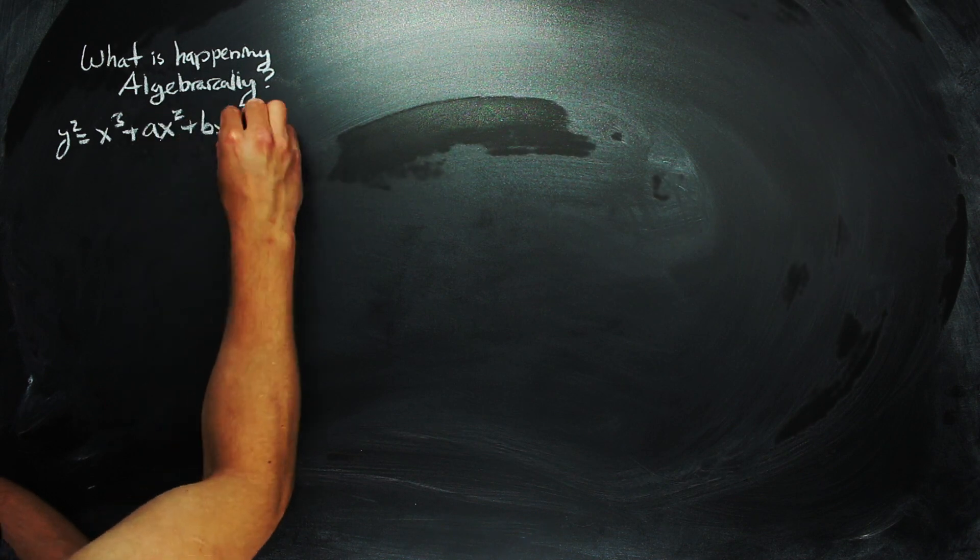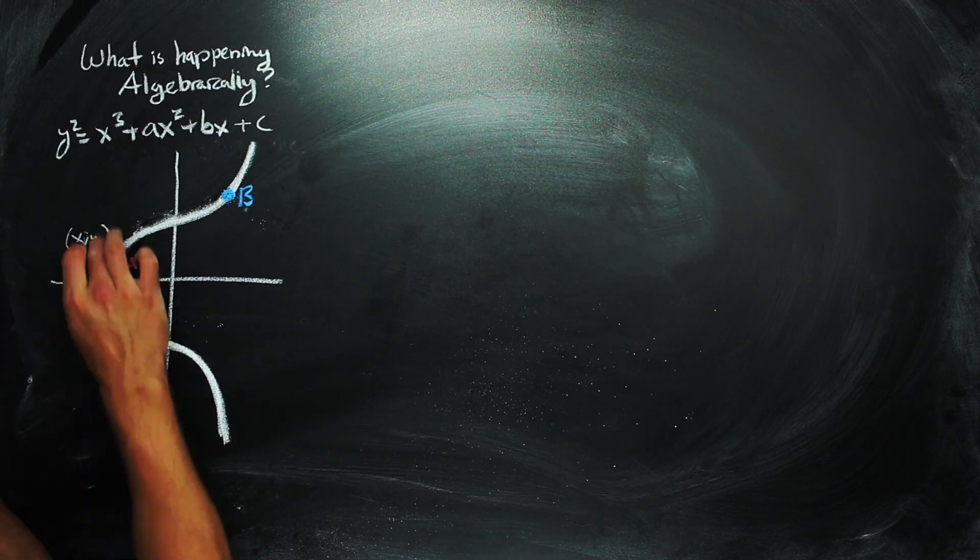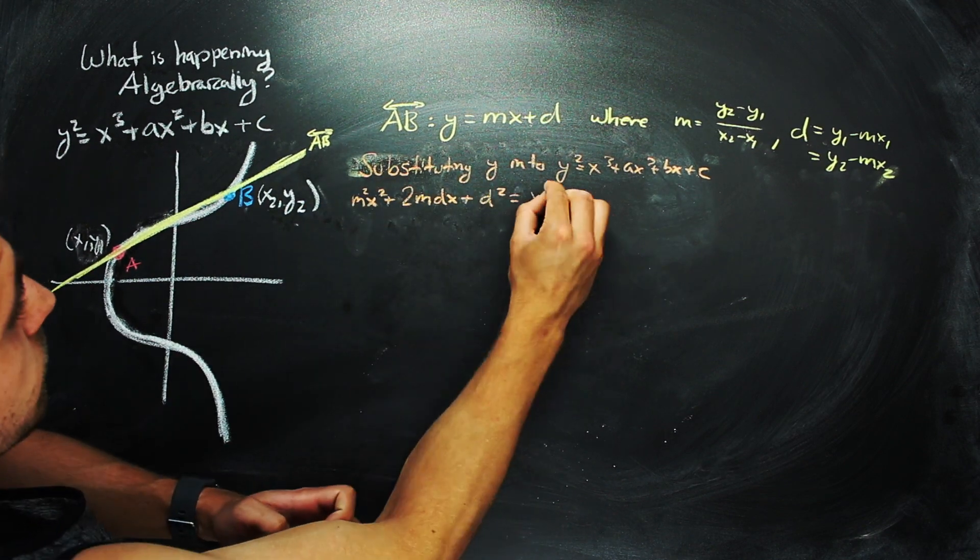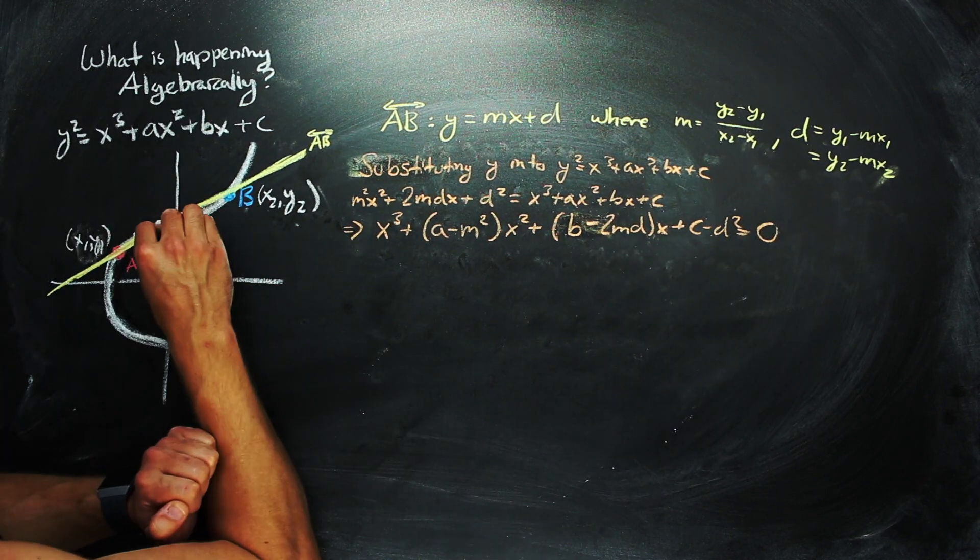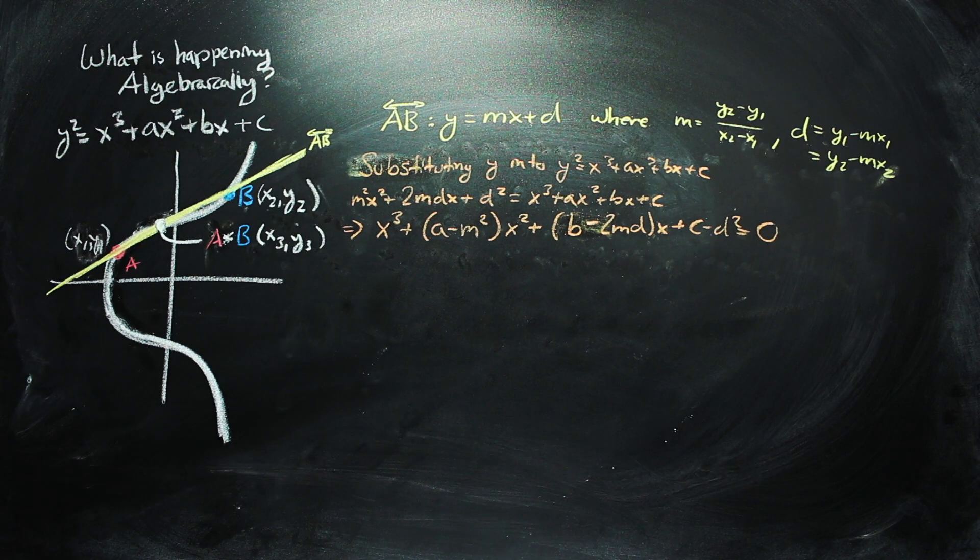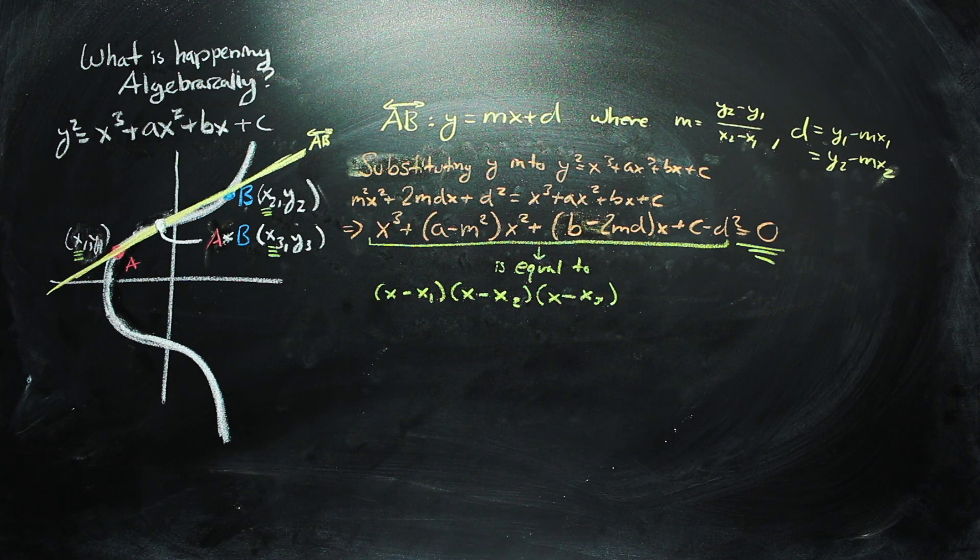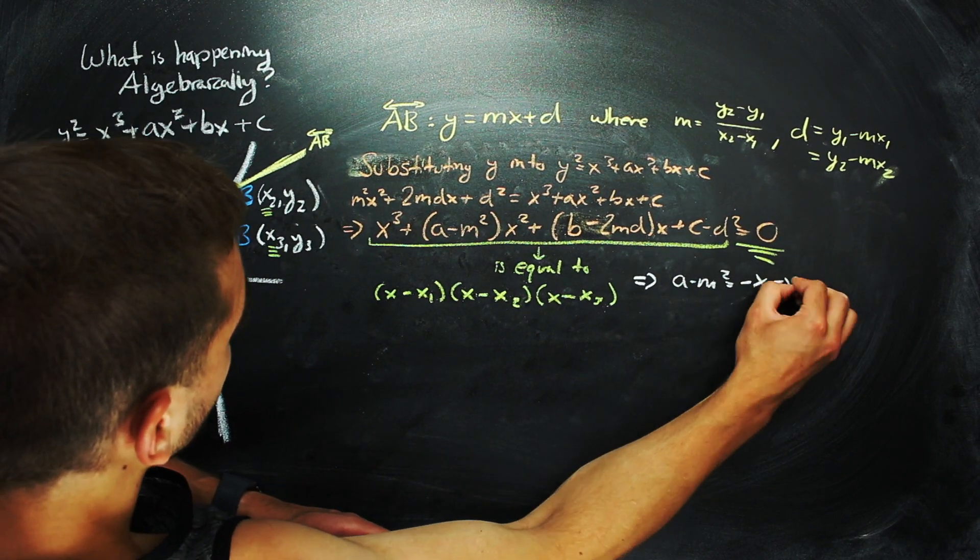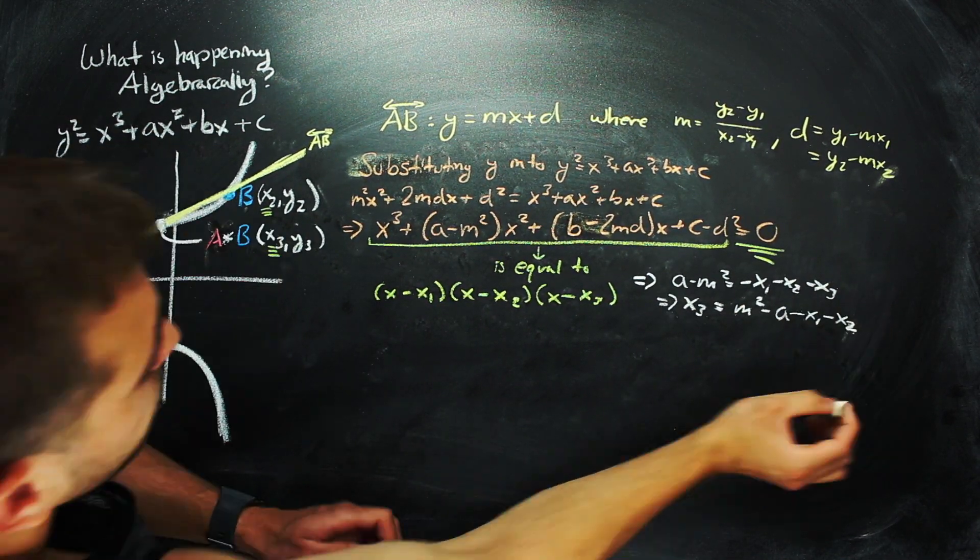Now, this is all great, but what does this look like algebraically? For a curve of the form y squared equals x cubed plus ax squared plus bx plus c, and two points a equals x1, y1, and b equals x2, y2, we can determine the line between them. And then substituting this equation for the line between them into the equation for the curve gives this expression, which is a cubic with three zeros at the x values where the line intersects with the curve. So, it may be written in this factored form as well. Using a root coefficient relationship, we can determine that a minus the slope squared is equal to the sum of the negative x-coordinates of the three points of intersection. And we can thus solve for our desired x-coordinate, and use the x-coordinate to get our y-coordinate.